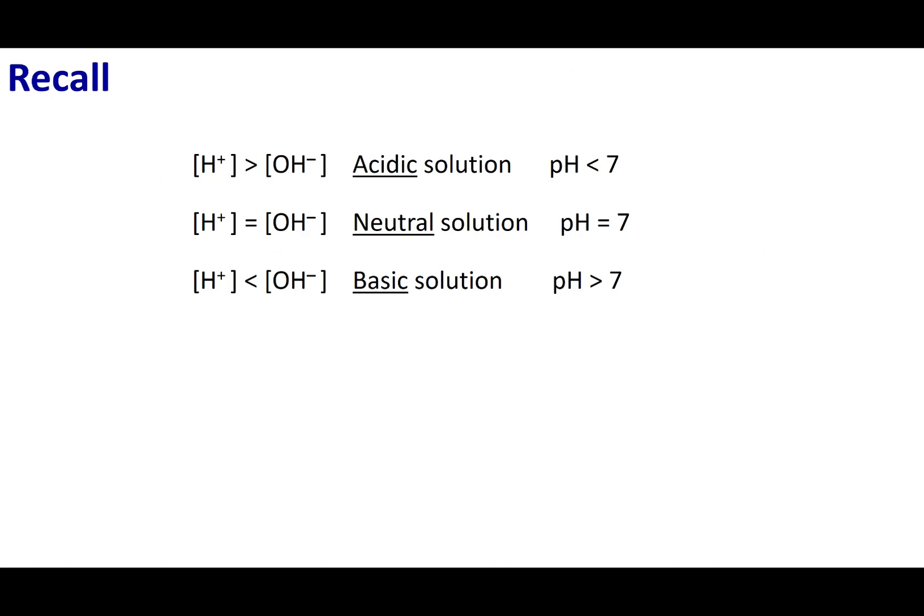That's really important because that's going to help us define if a solution is acidic or basic. If the H+ concentration is greater than the OH- concentration, it is going to be considered an acidic solution, and this is going to have a pH less than 7. If H+ and OH- are equal, we consider this a neutral solution. It has a pH of 7. If the H+ is less than the OH-, like our last example, then this is a basic solution and its pH is greater than 7. This is why we consider baking soda slightly basic. This is why you use it in your lab to neutralize acid spills.